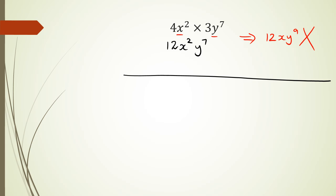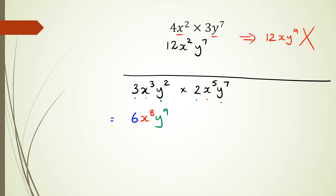For example, if I have 3x cubed y squared multiplied by 2x to the power of 5 y to the power of 7, I look at the coefficients first: 3 times 2 is 6. Then for the x variable: x cubed times x to the power of 5 gives x to the power of 8. Then for y: y squared times y to the power of 7 gives y to the power of 9. Final answer: 6x to the power of 8 y to the power of 9. That's it for this session, thanks for watching.